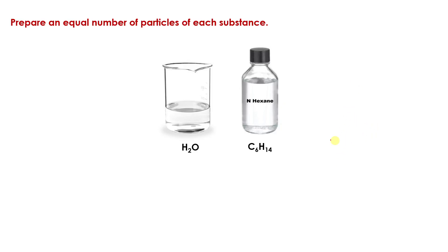Let's go back to the same problem, but this time let's approach this in a slightly different way. We'll prepare an equal number of particles of each substance. We have 18.1 grams of H₂O and 15.7 grams of C₆H₁₄. Again, we need to prepare an equal number of particles.